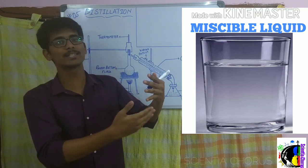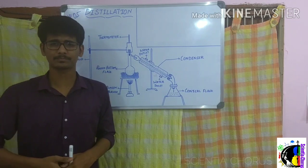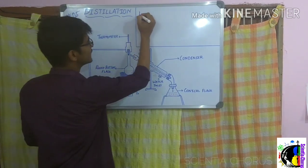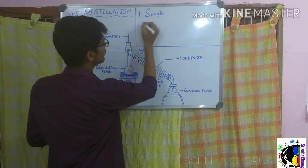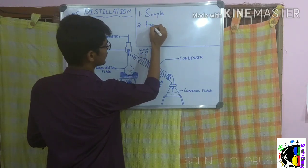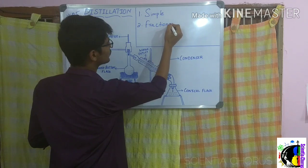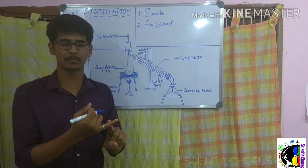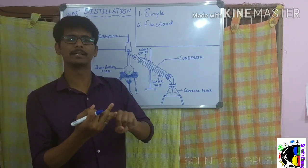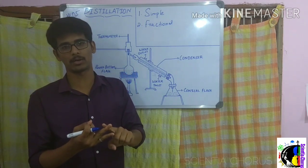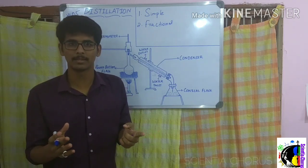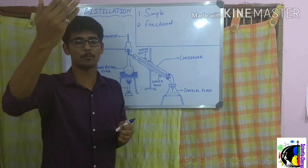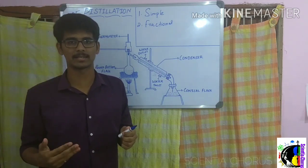Distillation is divided into two types: one is simple distillation and another one is fractional distillation. Now we are going to see only about simple distillation. Boiling point is nothing but the temperature at which a liquid boils and changes to vapor, that is the gaseous state.